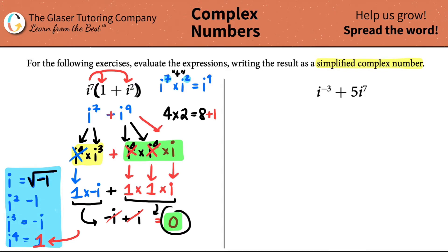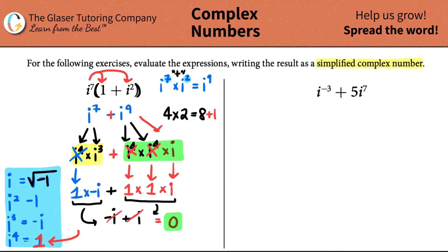Yeah, this is the answer — it just equals zero. Now let's work on the next one. I have i to the negative third plus five i to the seventh. I don't like this, and probably you don't either — i to the negative third.